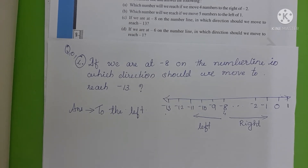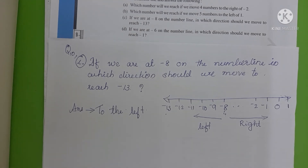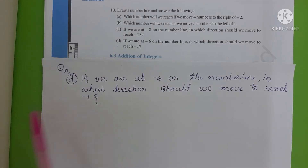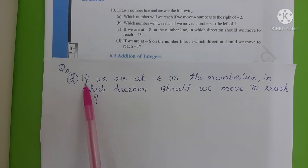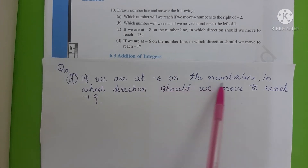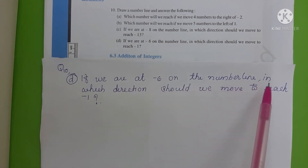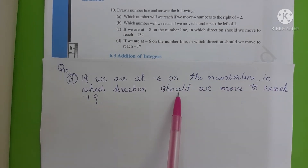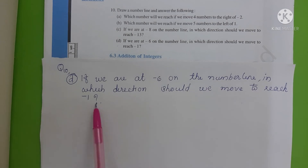Children, do you understand everything? If you have any doubts about these directions, you can ask me in the comments. Moving to part D. The question is: if we are at minus 6 on the number line, in which direction should we move to reach minus 1?